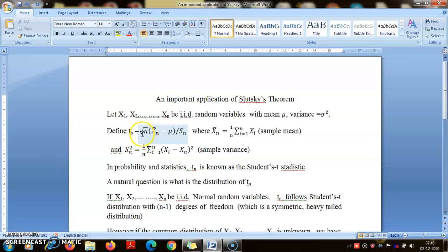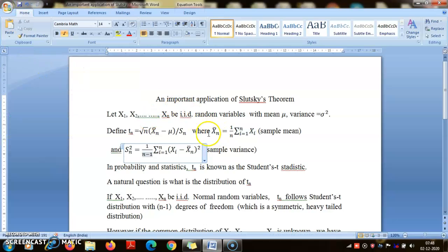Now I have defined a ratio: √n(X̄n - μ)/Sn. X̄n bar is the mean of X1, X2, Xn, and Sn² is called the sample variance. Actually, it should be n-1 in the denominator. It is called the sample variance in statistics.